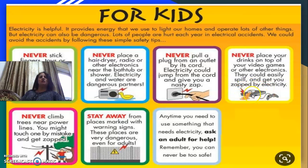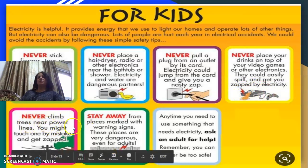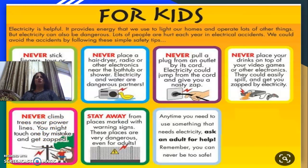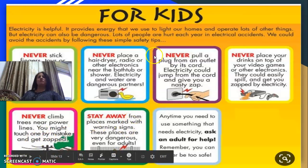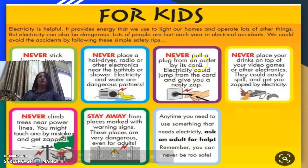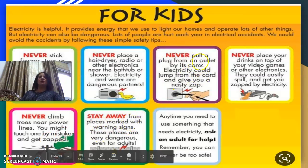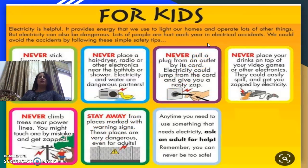Rule five: Never climb trees near power lines — you might touch one by mistake. Rule six: Stay away from places marked with warning signs. Rule seven: Any time you need to use something that needs electricity, ask an adult for help so that you remain safe.